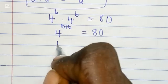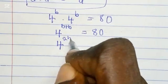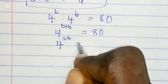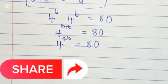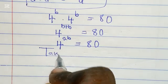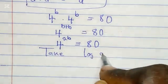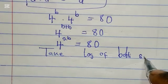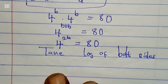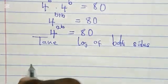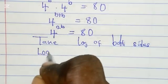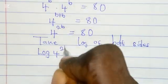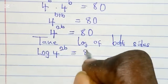Next step, take the log of both sides. When you take the log of both sides, you have log(4^(2b)) = log 80.